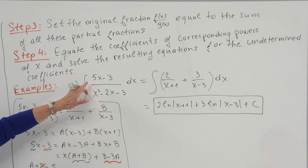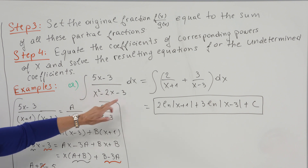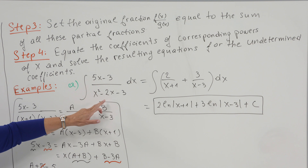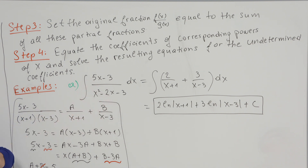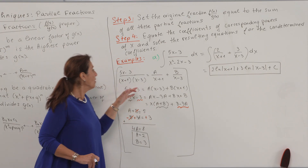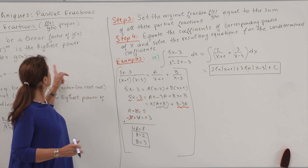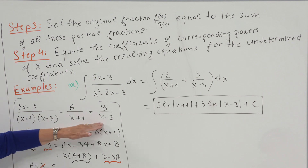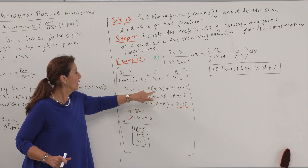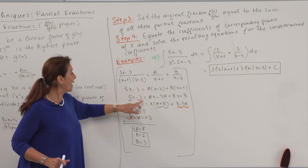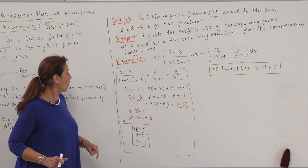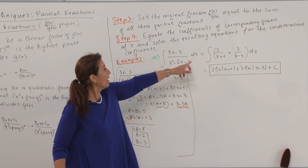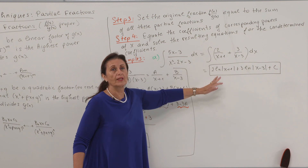In this example, we have (5x minus 3) over (x² minus 2x minus 3). I want to decompose into partial fractions. I see the denominator factors as (x plus 1) times (x minus 3). I set my fractions accordingly — since both factors have real roots and power 1. I put them on the same denominator and equate coefficients of x¹ and x⁰, finding that a equals 2 and b equals 3. Then I write my integral in this form and solve it.